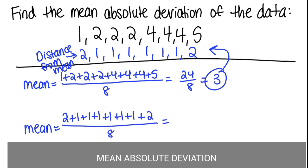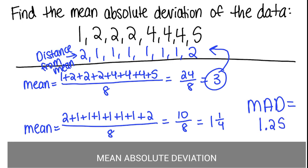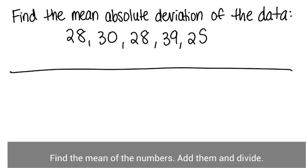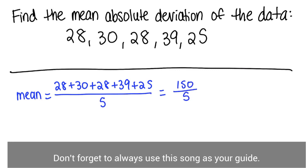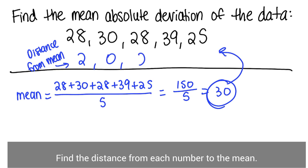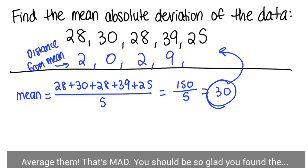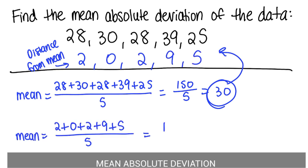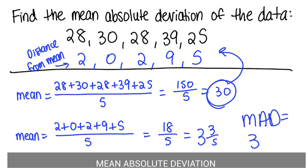Find the mean of the numbers — add them and divide. Don't forget to always use the song as your guide. Find the distance from each number to the mean, average them — that's MAD. You should be so glad you found the mean absolute deviation.